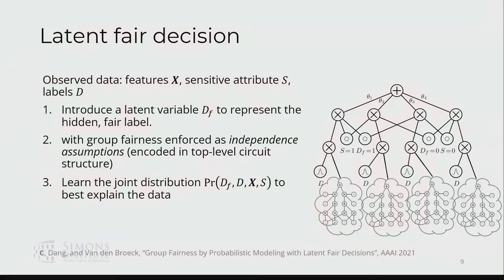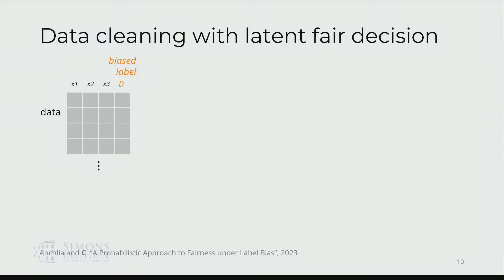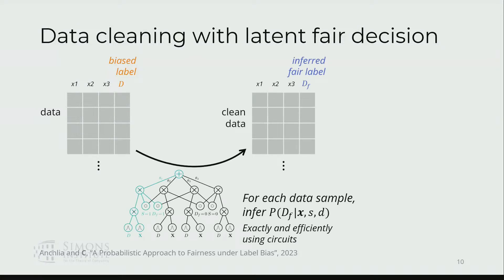Given those assumptions, we're going to learn the joint distribution over all the variables, including the latent variable, in a way that best explains the data. We could use this to make predictions about the hidden label. You could also use this to take some data and clean it up by inferring what the hidden label should have been for each data sample based on the observations you see.